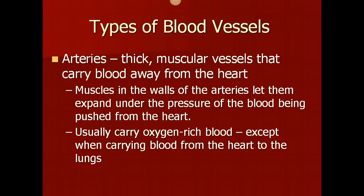The first type of blood vessel we're going to talk about is arteries. Arteries are thick, muscular vessels that carry blood away from the heart. Muscles in the walls of the arteries let them expand under pressure of the blood being pushed from the heart. Most arteries carry oxygen-rich blood, with the exception being when they carry blood from the heart to the lungs in the pulmonary circulation system.